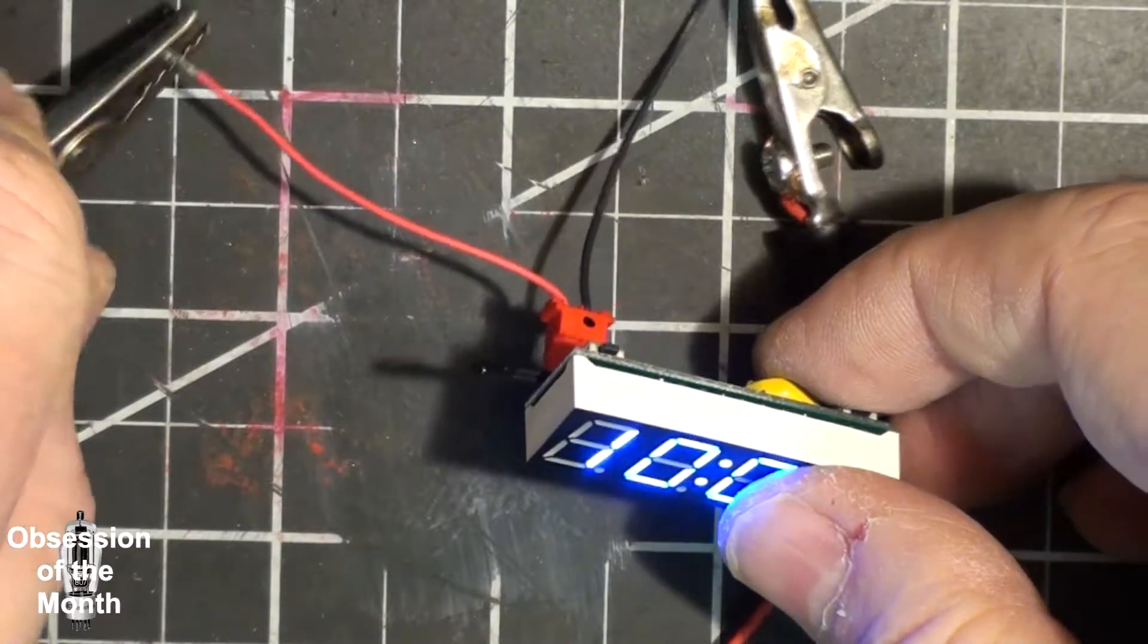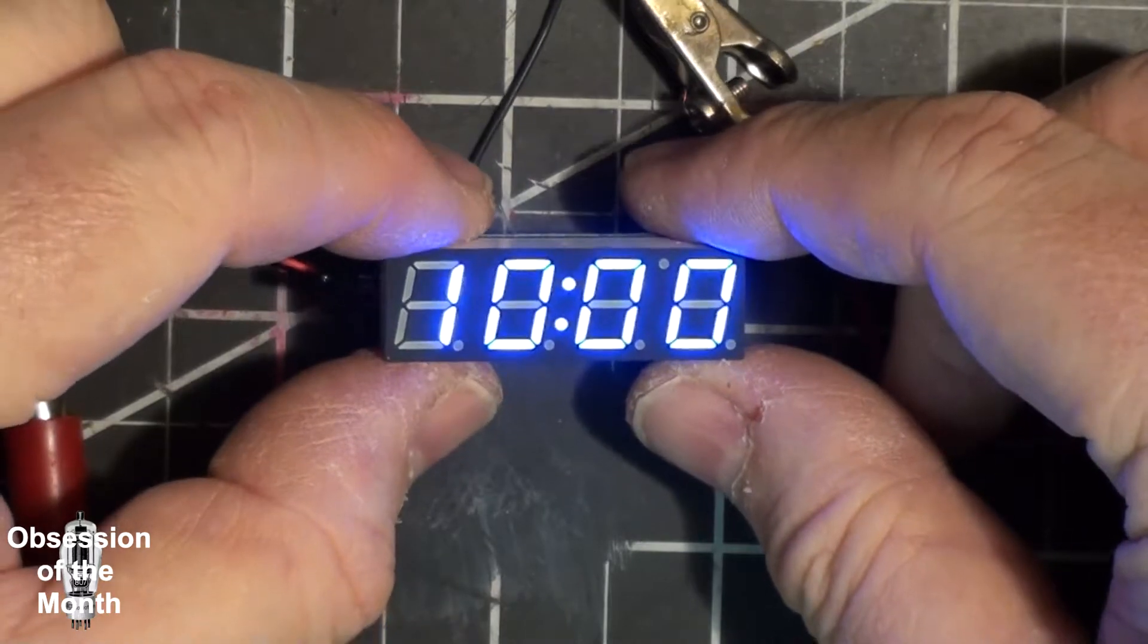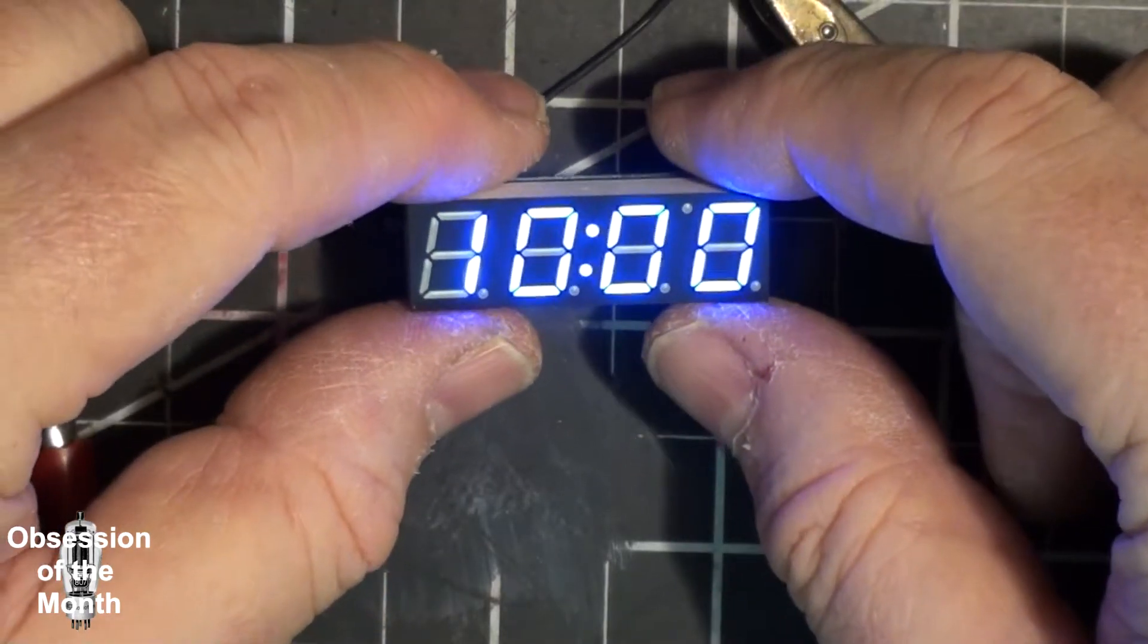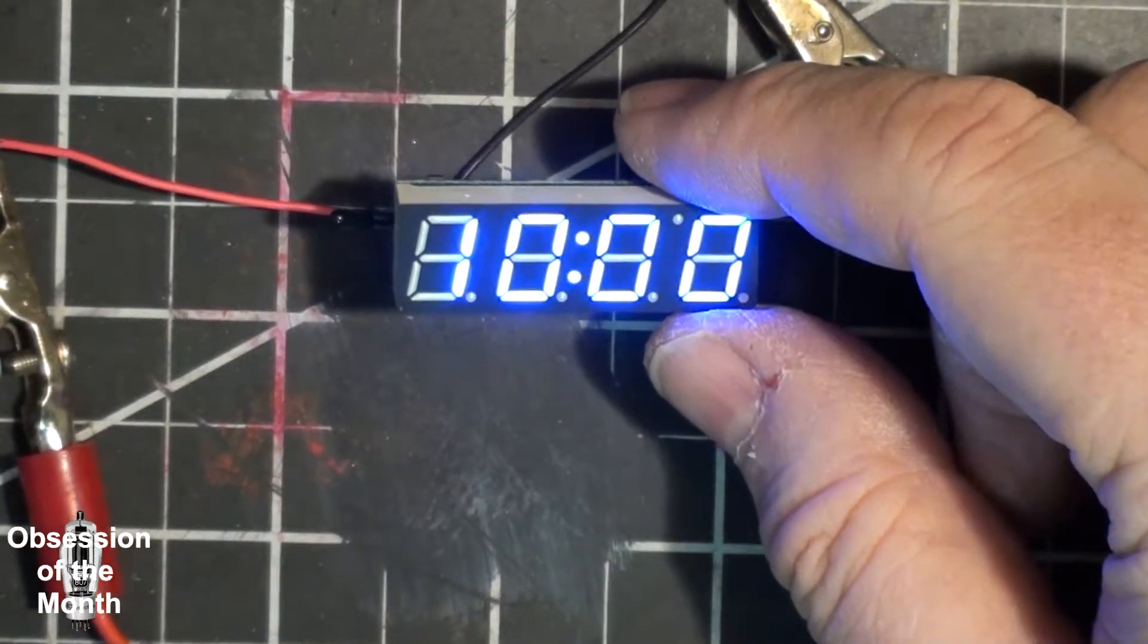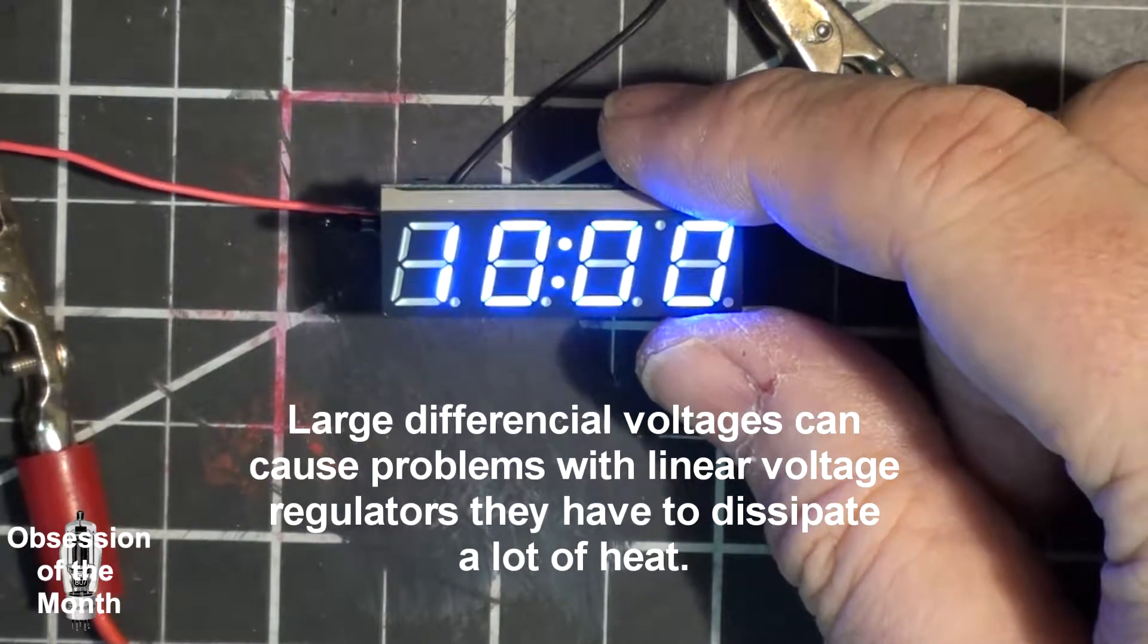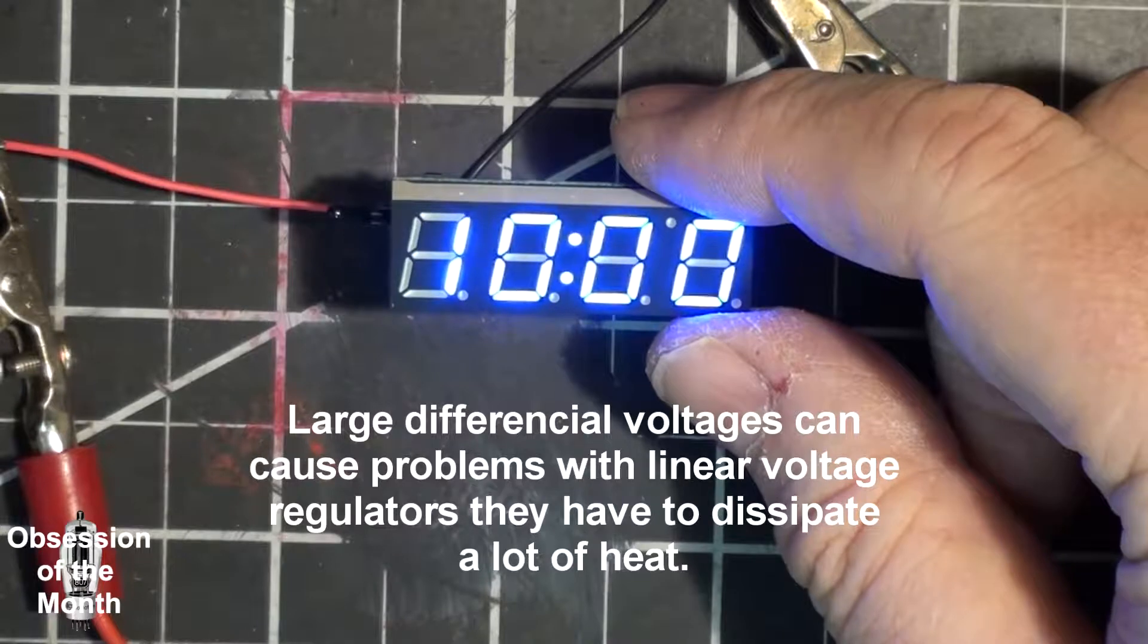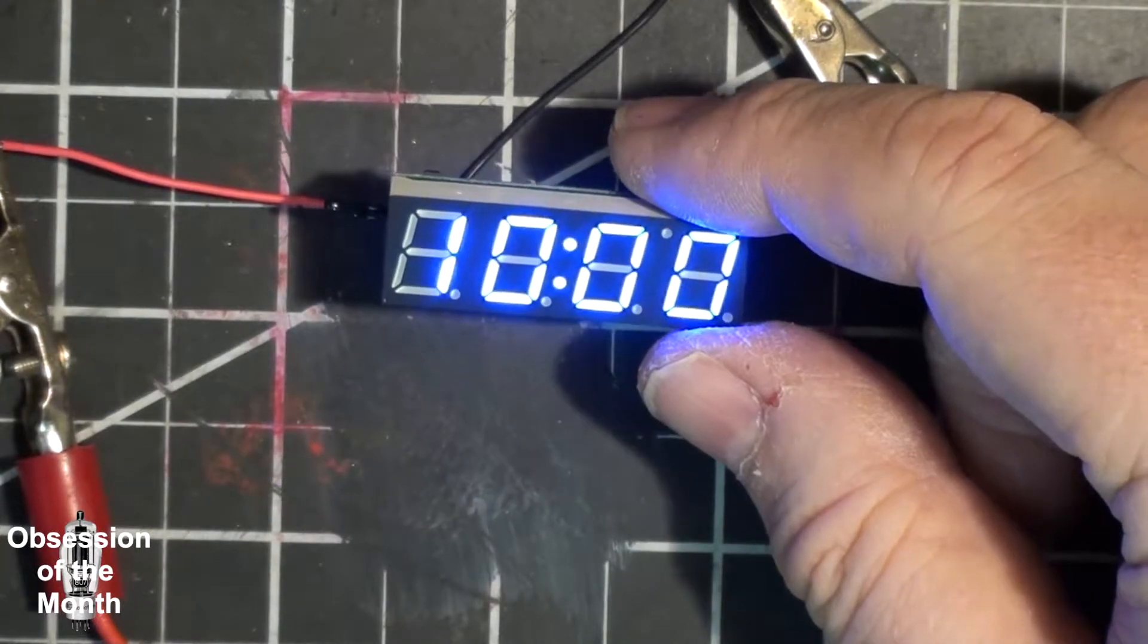They will work with any voltage ratings from 5.5 up to 30 volts, although it says not to use it on a 24 volt system because you could fry it. That's because there's a small voltage regulator on here. So if you're going to use this on basically anything over 12 volts, you probably would want to put in a separate voltage regulator or a small buck converter.